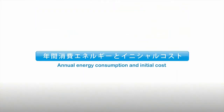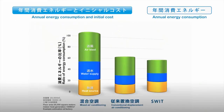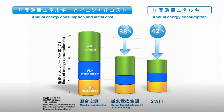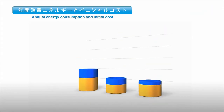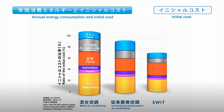Annual energy consumption and initial cost. Compared to mixed air conditioning, SWIT reduces annual energy consumption by 42% and provides higher energy saving effects compared to conventional air conditioning. Also, the initial cost can be reduced by 30% compared to mixed air conditioning, with additional cost savings achieved compared to conventional air conditioning.